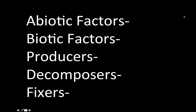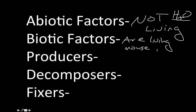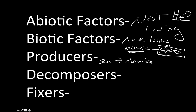Before we can talk about all the cycles, we need to know a few vocabulary terms. Abiotic factors are things that are not living. Biotic factors are the parts of the ecosystem that are living. An example of an abiotic factor would be things like water or the atmosphere. Biotic factors would be things like grass or a mouse. Producers are things that go through photosynthesis — they take energy from the Sun and convert it into chemical energy, providing energy for everything else in an environment.